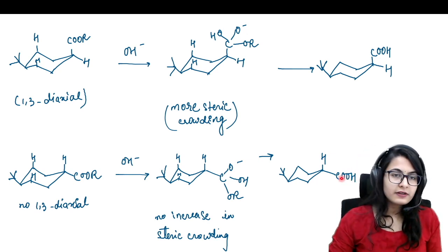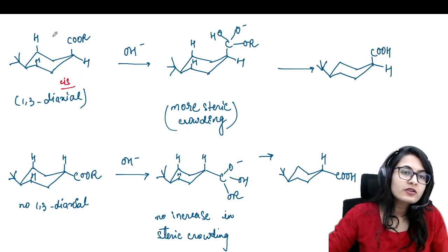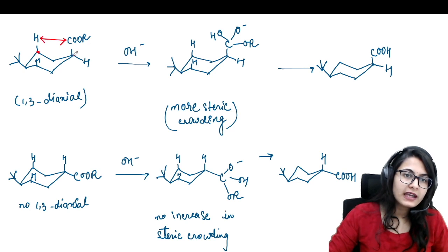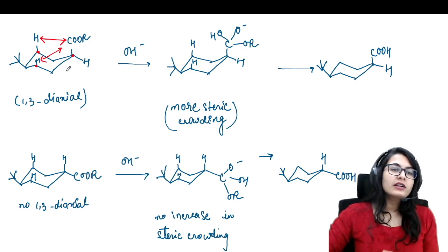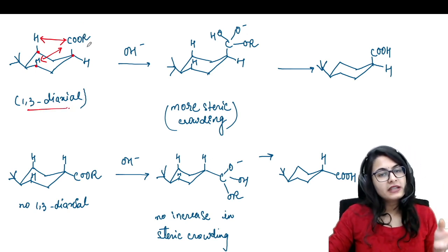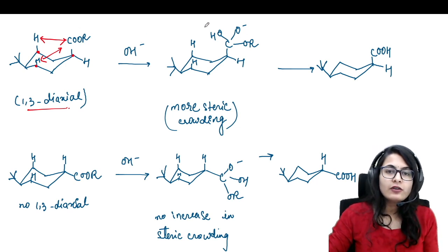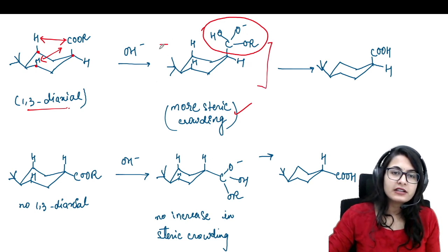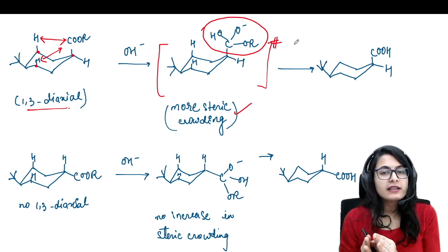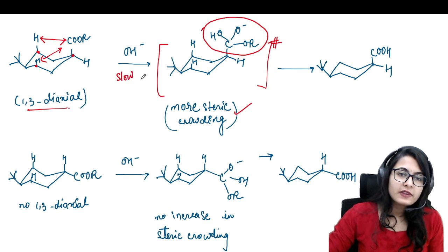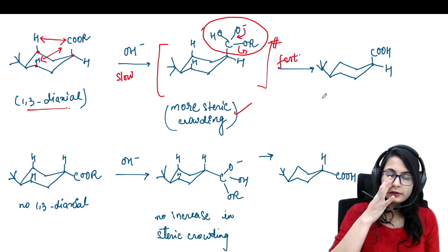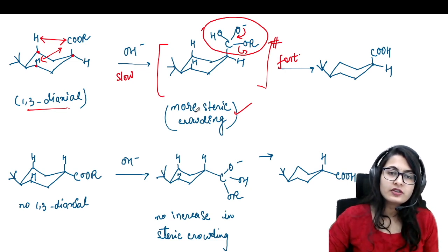So if it is so similar, then why is there a difference in the rate? Because in the cis isomer, the ester group is already facing a 1,3-diaxial interaction. On the third position from the ester itself, on both sides, you are having two hydrogens causing steric repulsion — this is called the 1,3-diaxial interaction. When the OH⁻ attacks, the bulk of the tetrahedral intermediate increases, causing more steric crowding in the transition state or intermediate. So there is more steric crowding and that's why the reaction is going to be a little bit slower — the first step itself is slow.